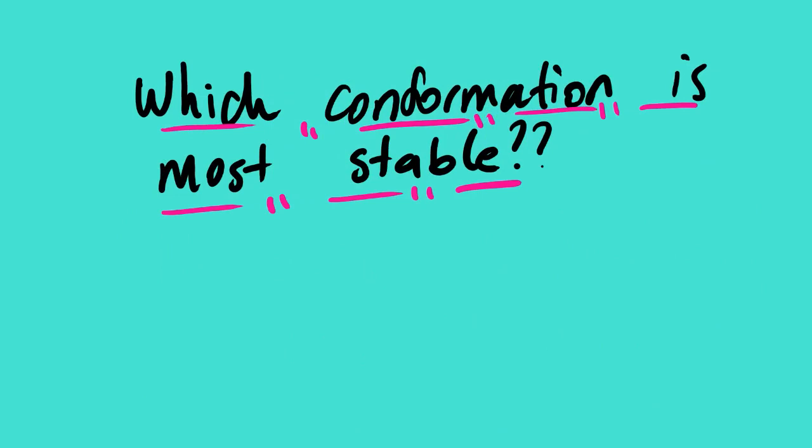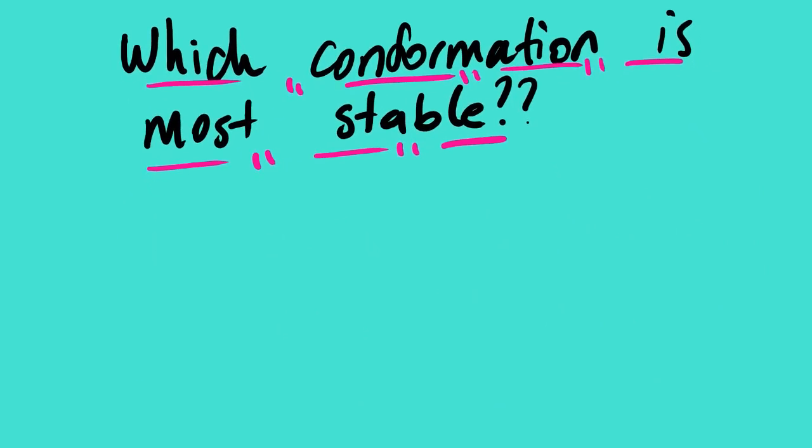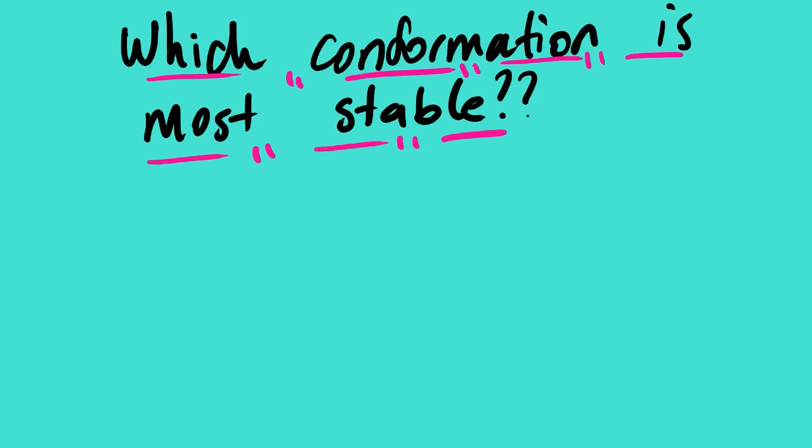In Lesson 101 we went through different types of conformation and looked at different names based on their dihedral angles. Today's lesson we are going to look at the stability of each conformation.